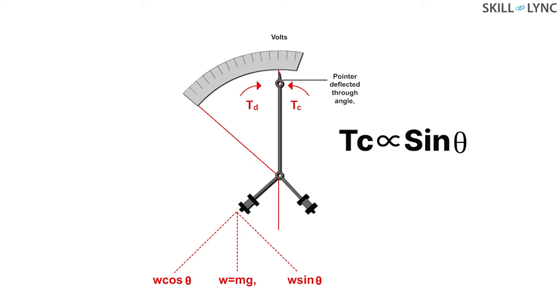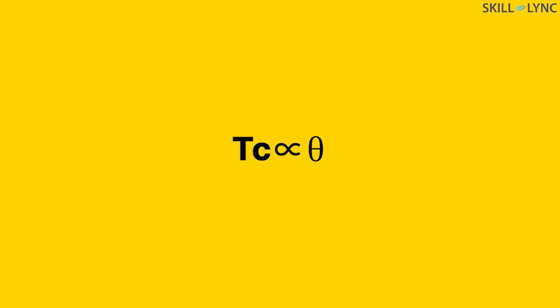The sin theta component is used because if we look at this image, the deflecting torque moves the needle towards the right and the control torque acts in the opposite direction from the left. The component on the right side is sin theta and hence the sin theta component is considered. Thus, in spring control, Tc is directly proportional to theta and in gravitational control, Tc is directly proportional to sin theta.